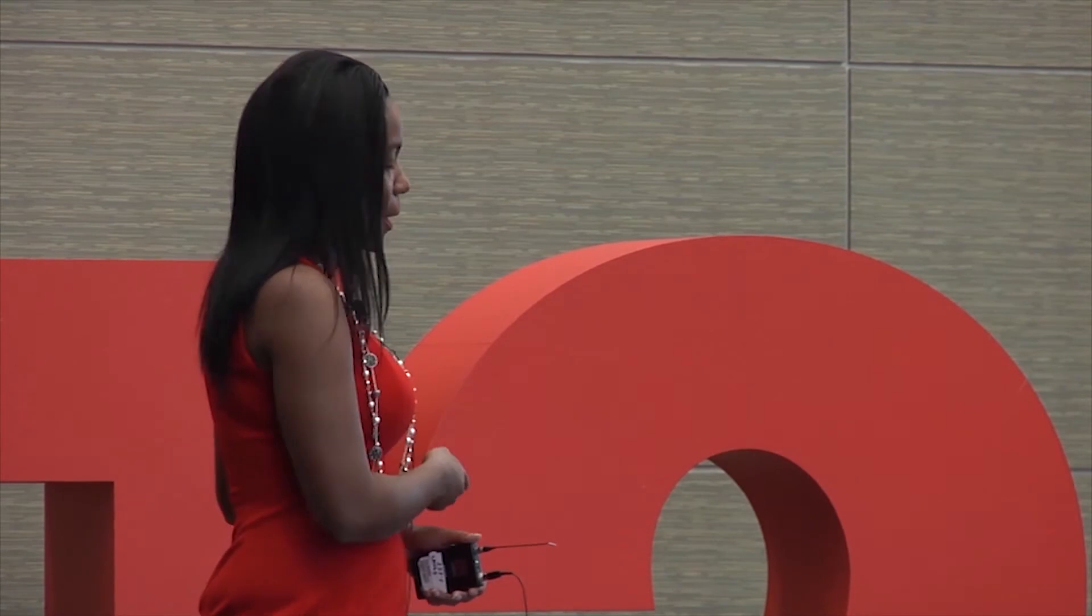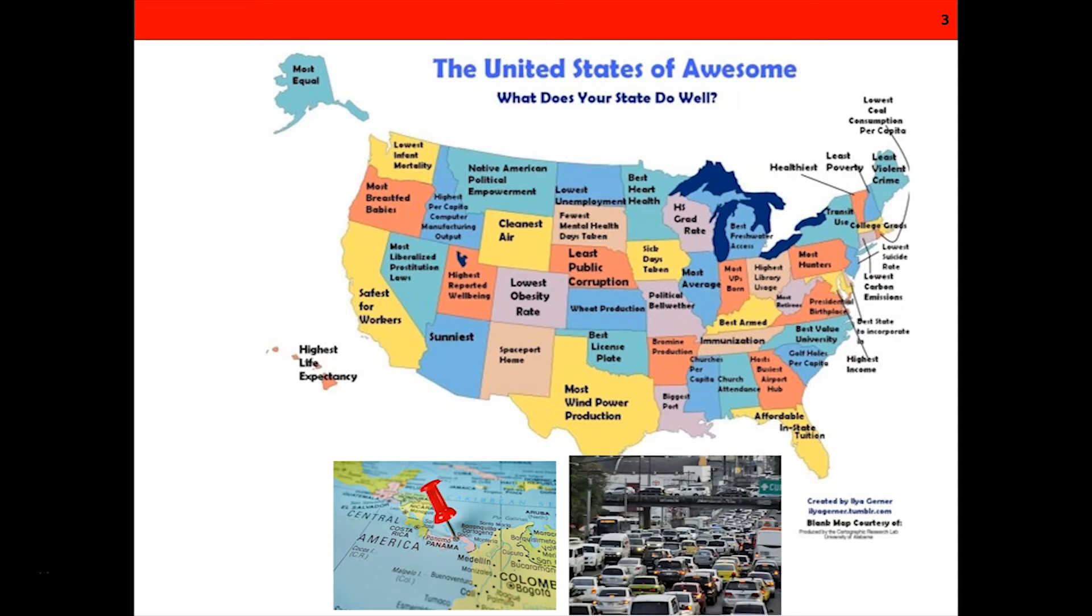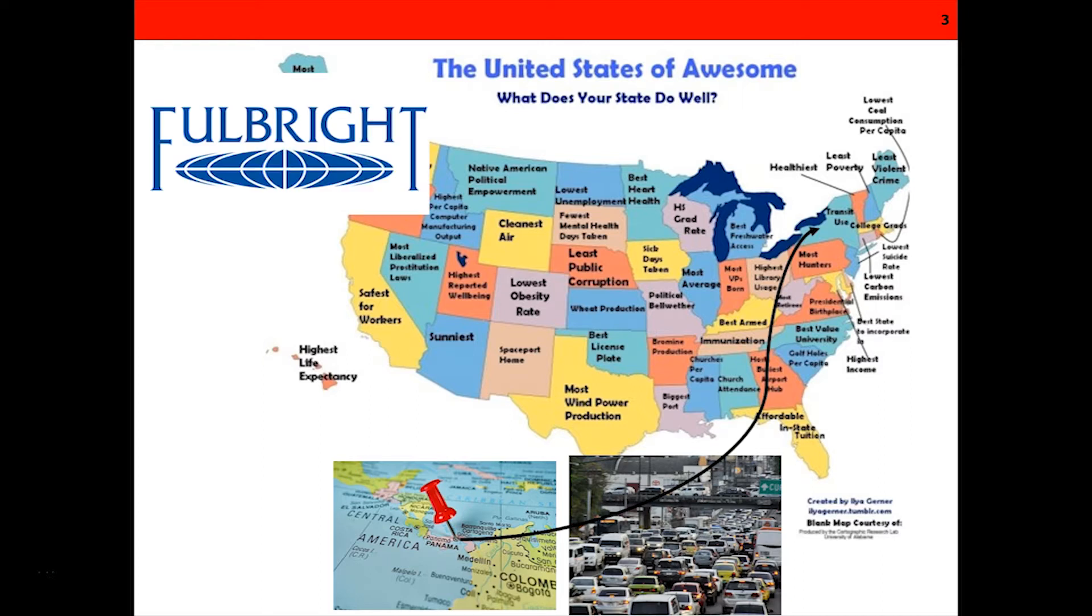I am originally from Panama, not Panama City, Florida, but Panama the country. Just to give a perspective of US maps, I found this one called the United States of Awesome. I don't know if it makes a lot of connections between Panama and the place I chose to do my PhD, but the traffic in Panama is pretty bad. From Panama I went to New York, and apparently New York has the best transit use, so I guess it makes sense why I transitioned from Panama to New York based on the United States of Awesome. I was part of a Fulbright program there.